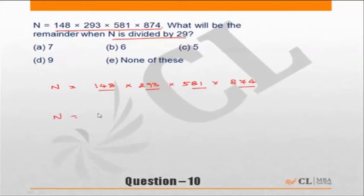29 into 5 should be 145 plus 3. So 148 is nothing but 145 plus 3. 145 is a multiple of 29. This is 29 into 5.